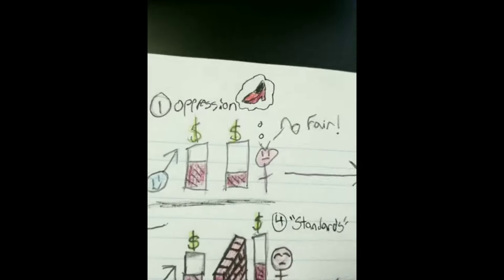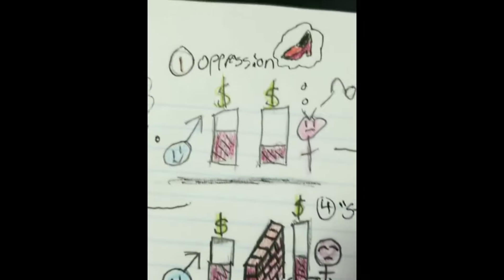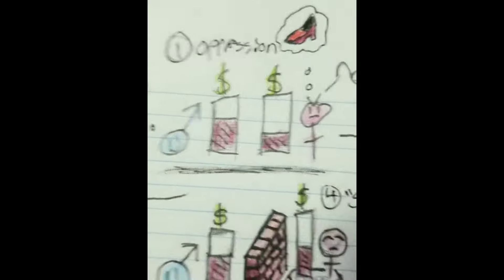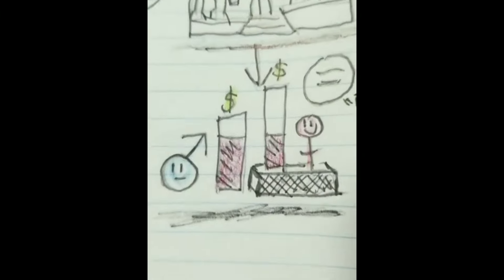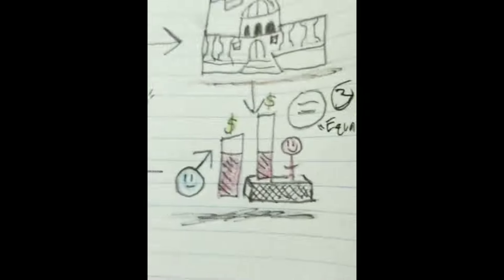So usually, men make more than women, which is not fair. Let's not talk about why. We'll just assume it's oppression. So to combat this oppression, we need the government to make laws so that women can make an equal amount of money, which is fair.